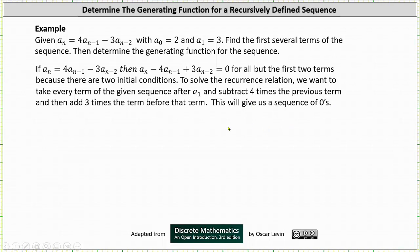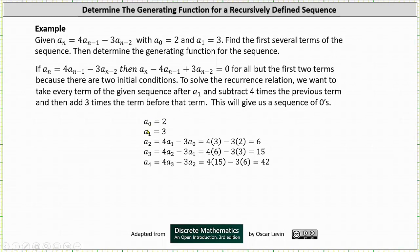Let's find the first several terms of the given sequence. We are given a sub zero equals two and a sub one equals three. Using the recurrence relation, a sub two is equal to four times a sub one minus three times a sub zero, which is four times three minus three times two, which equals six. A sub three is equal to four times a sub two minus three times a sub one, which is four times six minus three times three, which equals fifteen. A sub four is equal to four times a sub three minus three times a sub two, which is four times fifteen minus three times six, which equals forty-two.